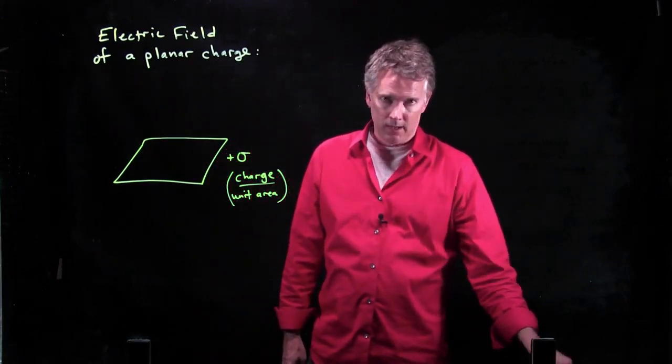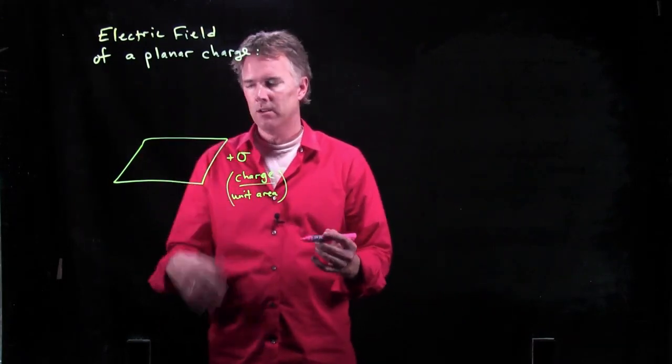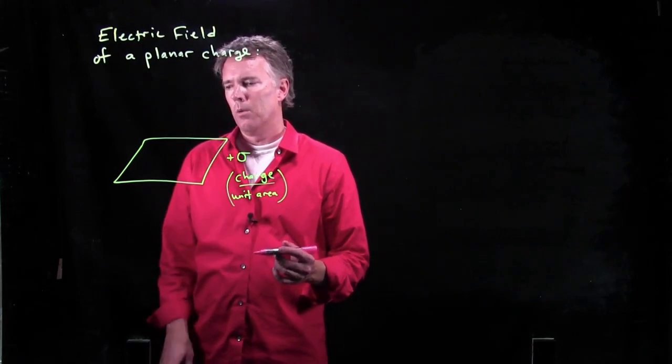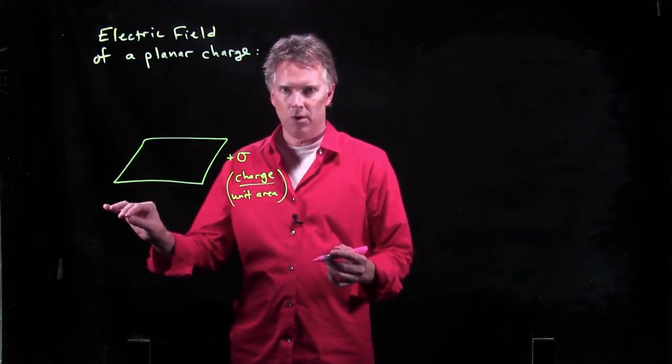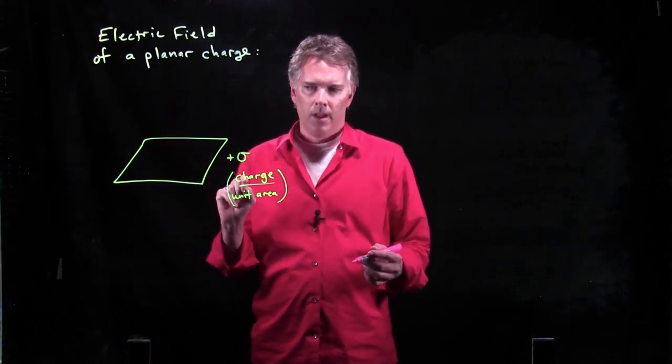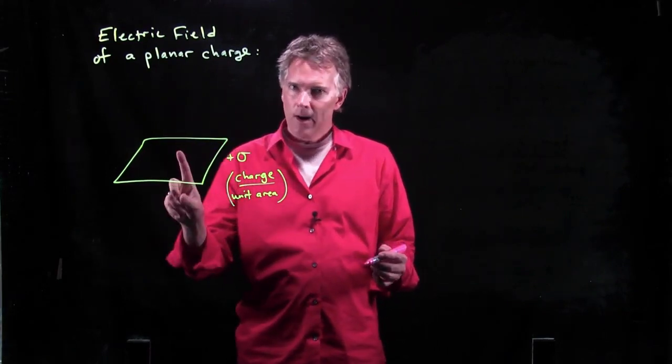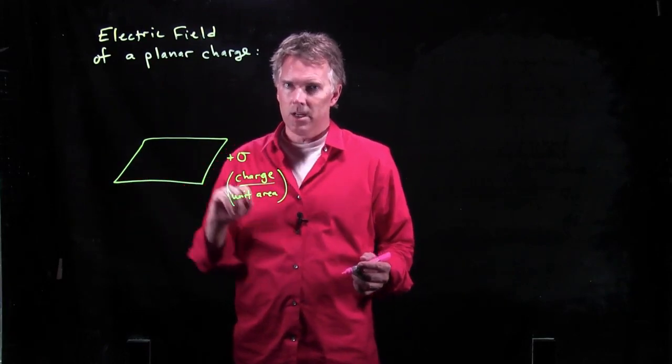What does the electric field look like from a sheet of charge? Well, when we talked about the electric field from a line charge, we said it has to go radially outward. And the reason it has to go radially outward is it was an infinitely long line charge.